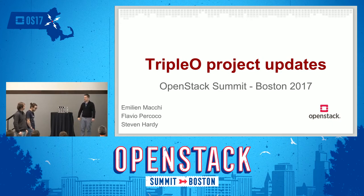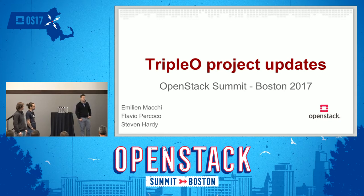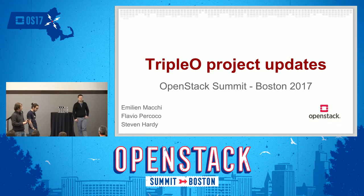Flavio, if you want to introduce yourself. My name is Flavio. I also work at Red Hat. I do many things in OpenStack, and being in the TC is one of them. Right now I'm working on deployment and specifically putting OpenStack on containers as part of the TripleO project. And I'm Steve Hardy. I also work for Red Hat. I've been working on TripleO and prior to that mostly Heat for a number of years. Today I'm going to talk a bit about composability and also containers as Flavio mentioned.